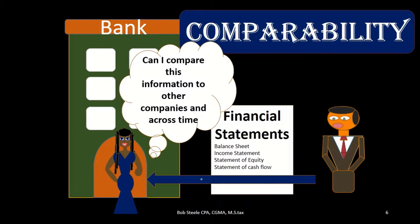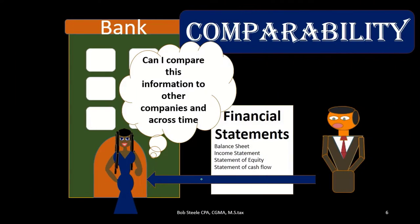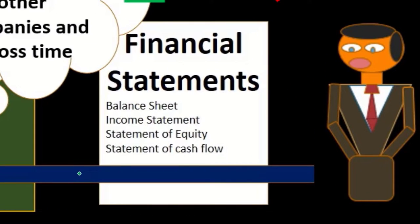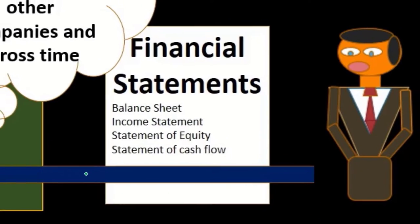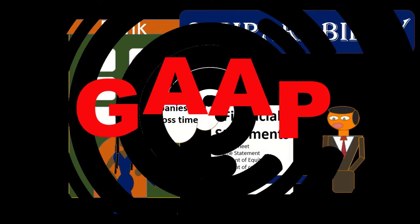The bank may have multiple clients they're thinking about giving a loan to. The question is: could the bank compare this financial statement to someone else's financial statements and make a decision between the two? Could the bank compare these financial statements to some prepared in the past, to help determine whether the company is doing better or worse than it had been?